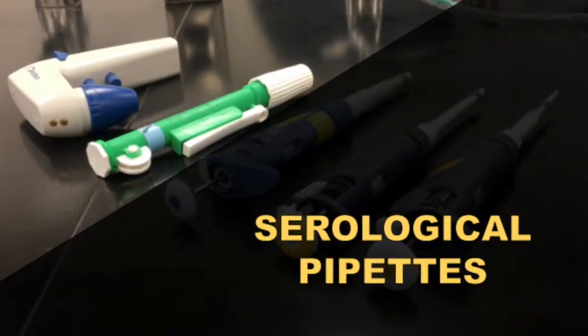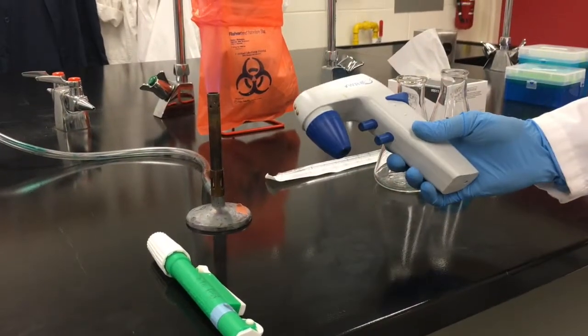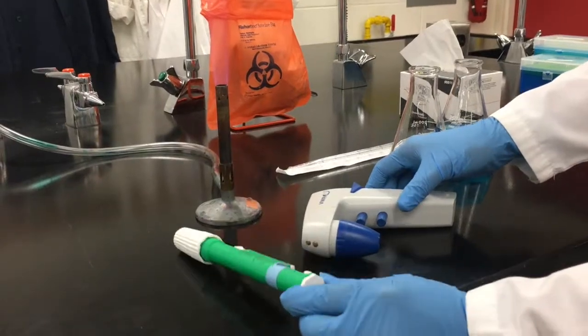The electronic and manual serological pipettes are useful when transferring larger than 5 mils of a liquid. Electronic is great for pouring accurate volumes of numerous plates. The manual is useful when only a few transfers are needed.